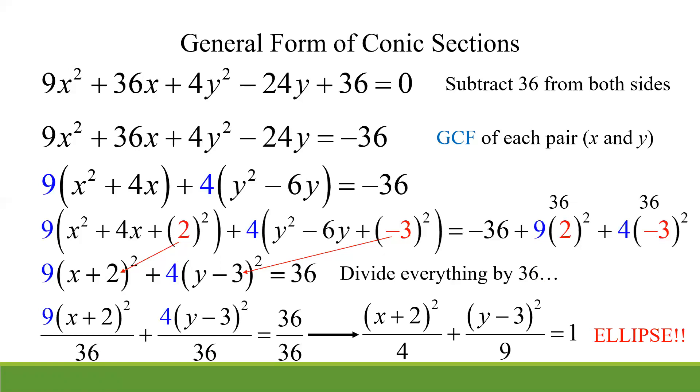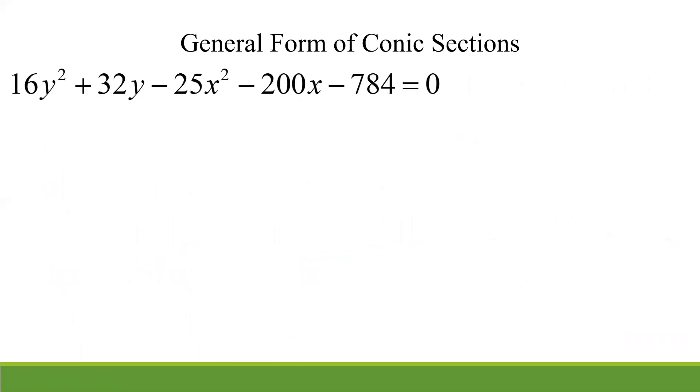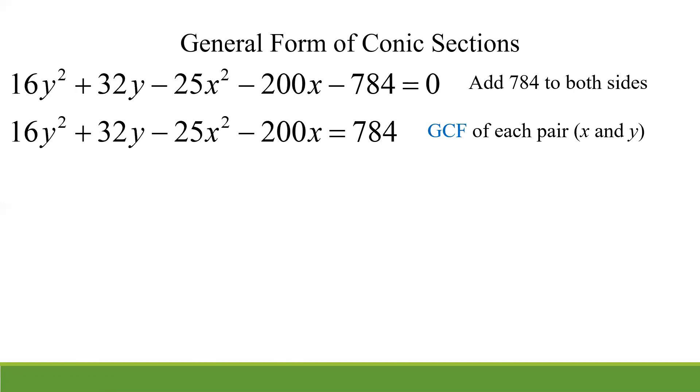Let's look at one more example. Actually, we got two more, but let's go and do one more here. So we have this one. And there's some big numbers here. But again, they're generally going to be engineered to come out clean. So keep that in the back of your mind as you do this. So what's the first thing we do? Well, get that constant to the other side. So I'm going to add 784. Look for your GCFs. Ask yourself real quick, what's your GCF of the Y pair? What's your GCF of the X pair? Well, in this case, 16 and 25. And I'll give you a hint. It's usually whatever that leading coefficient is of the squared term, that's probably going to be your GCF.